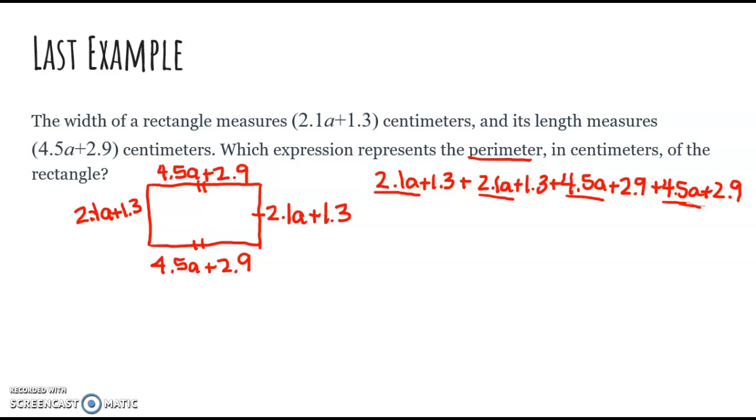Take your handy dandy calculator and add all those together and I get 13.2a. Then I'm going to add my constants together. 1.3 plus 1.3 plus 2.9 plus 2.9. And that gives me 8.4.